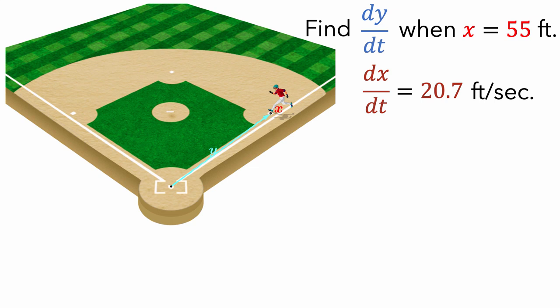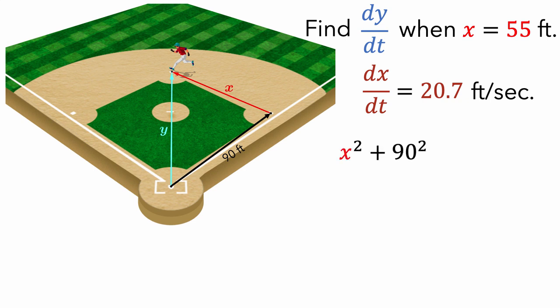To answer this question, we first need to define an equation that expresses the relationship between x, Luke's distance from first base, and y, Luke's distance from home plate. If we watch Luke run and think about the lengths of x and y, we can see that these lengths form two sides of a right triangle with the first base line, which has a length of 90 feet. And the Pythagorean theorem tells us a relationship between these three lengths, specifically x squared plus 90 squared equals y squared.